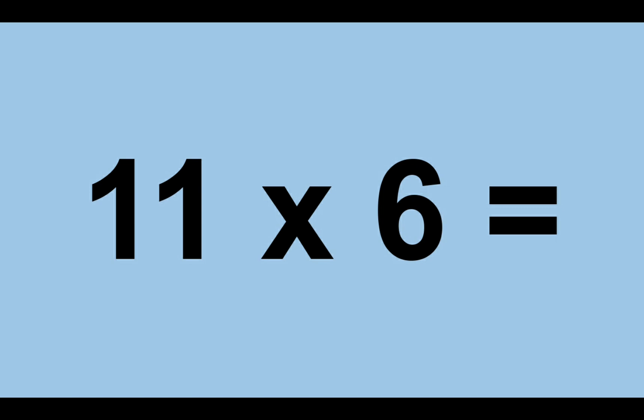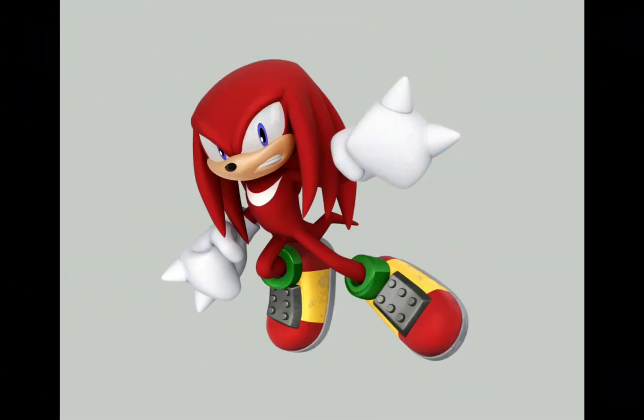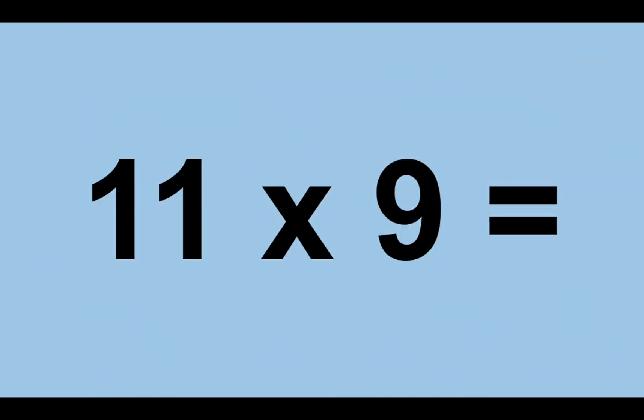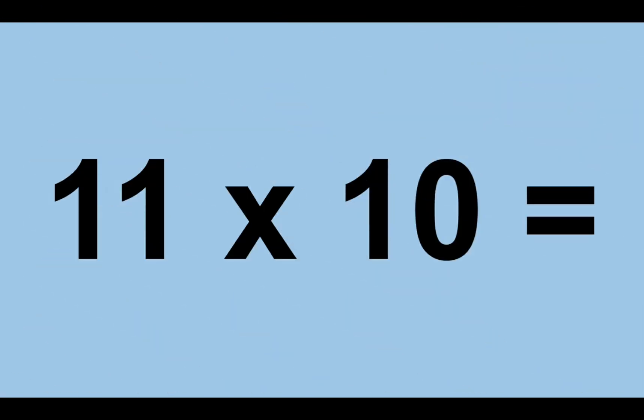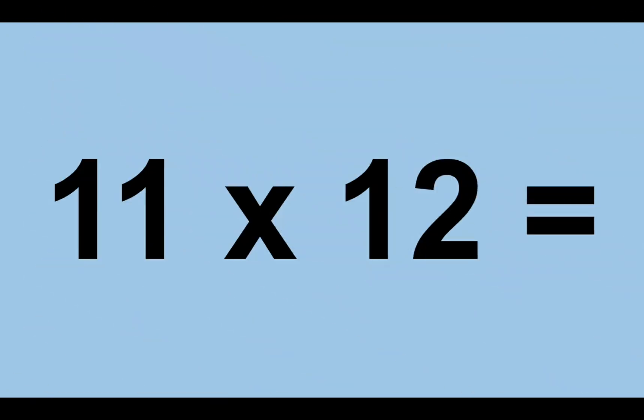Eleven times six equals sixty-six. Eleven times seven equals seventy-seven. Eleven times eight equals eighty-eight. Eleven times nine equals ninety-nine. Eleven times ten equals one hundred and ten. Eleven times eleven equals one hundred and twenty-one. Eleven times twelve equals one hundred and thirty-two.